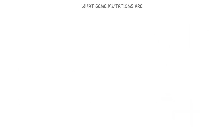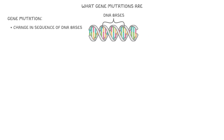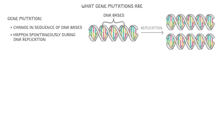Starting with what gene mutations are: a gene mutation refers to a change in the sequence of DNA bases. Mutations can happen spontaneously during the process of DNA replication, which is when cells make copies of their DNA before they divide. In our example here, these bases have mutated during that DNA replication.